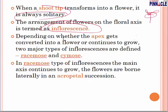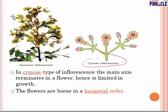Depending on whether the apex gets converted into a flower or continues to grow, two major types of inflorescence are defined: one is racemose and the other is cymose. This is important to remember, as questions are asked in main competition exams. In racemose type of inflorescence, the main axis continues to grow and flowers are borne laterally in an acropetal succession.